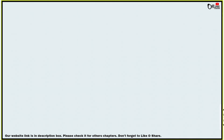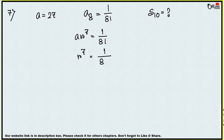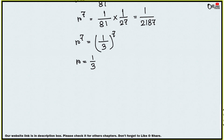Sum number 7: the first term of the GP is a = 27, and the 8th term a8 = 1/81. Find the sum of the first 10 terms. Using a8 = a·r⁷: 27·r⁷ = 1/81, so r⁷ = 1/(81 × 27) = 1/2187 = 1/3⁷. Therefore r = 1/3, which is less than 1.